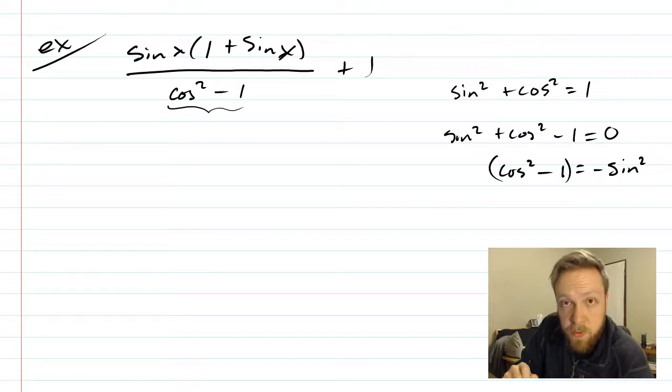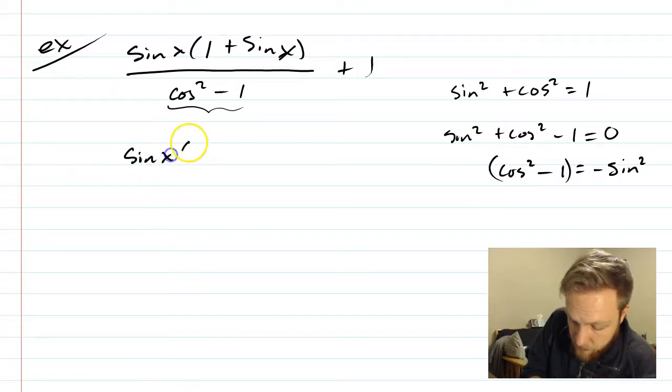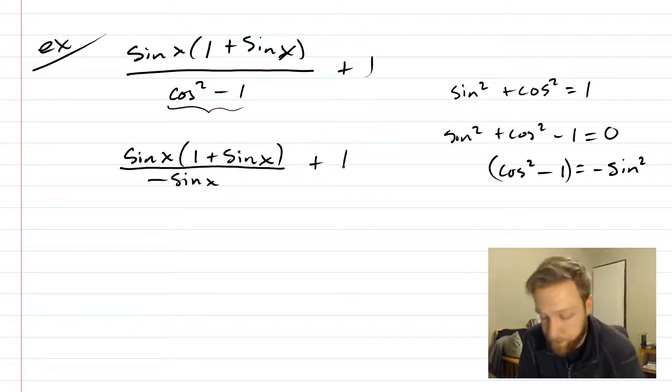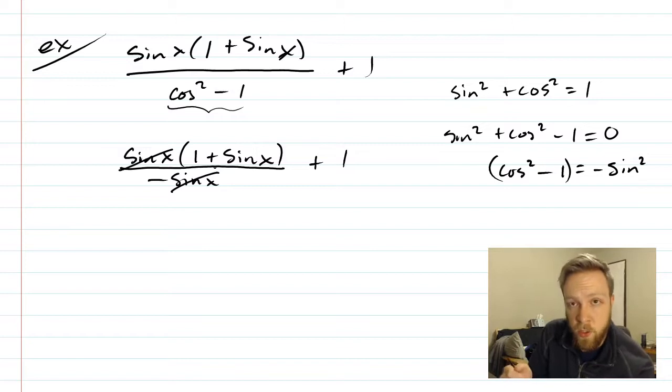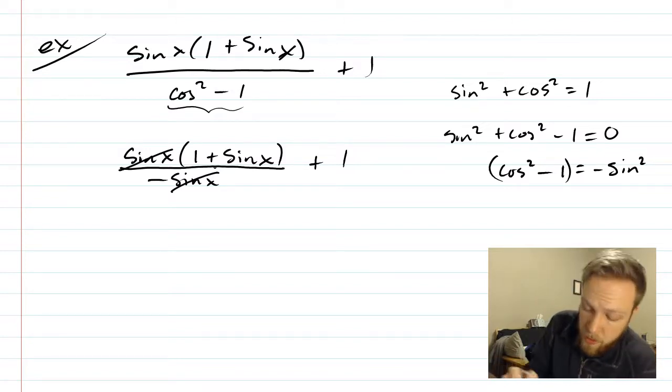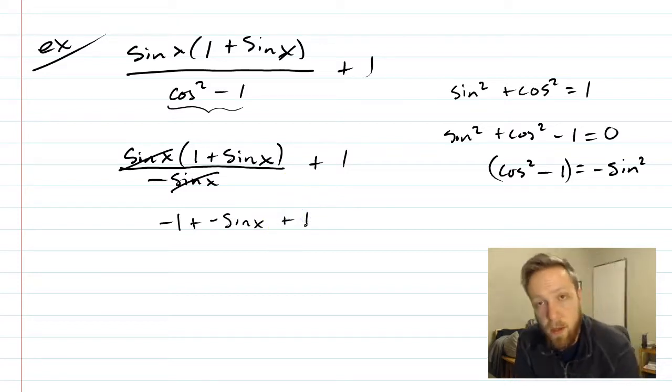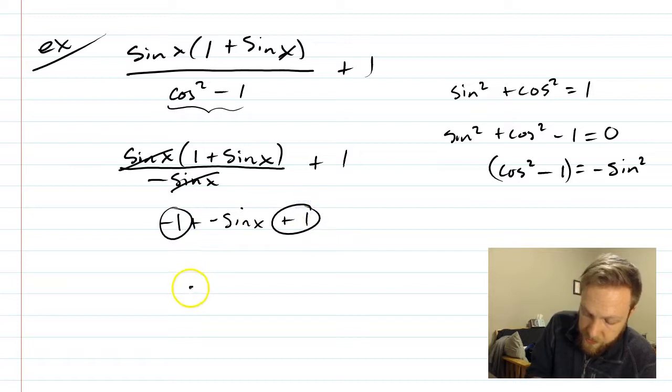So when I see cosine squared minus one, I'm just going to replace it. Now leaving everything around it. I now have a negative sine x downstairs with a one out on the side. So this sine and sine will cancel. And that's okay. The issue here is that now we have you can think of it like a negative one underneath the fraction in the denominator. So what that's like is if we were to flip the signs of one plus sine x. So this would be negative one plus negative sine x, and then the plus one from the outside. Now that negative one and positive one cancel.